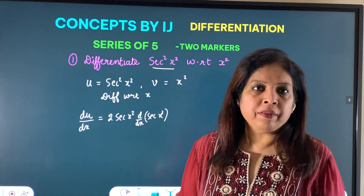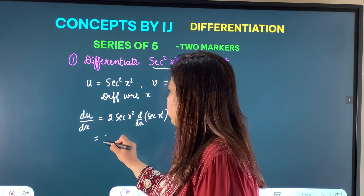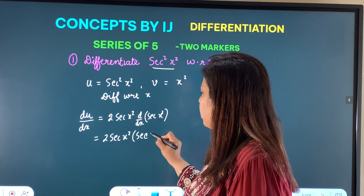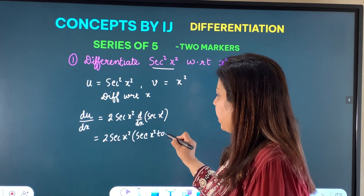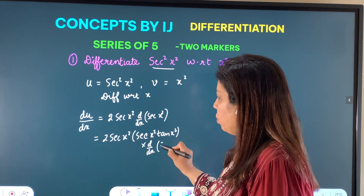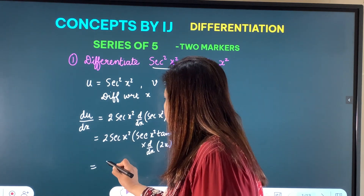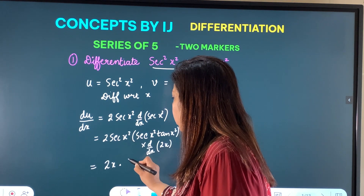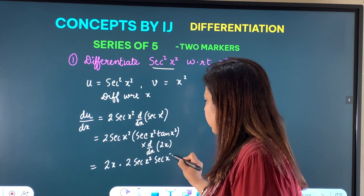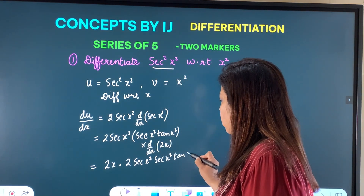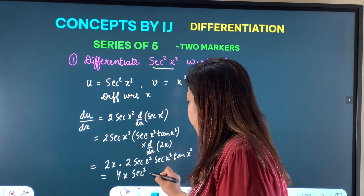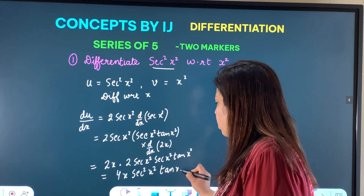The derivative of sec(x) is sec(x)tan(x). So this becomes 2 sec(x²) · sec(x²) tan(x²) · derivative of x², which is 2x. So du/dx = 2x · 2 sec(x²) · sec(x²) · tan(x²), which we can write as 4x sec²(x²) tan(x²).